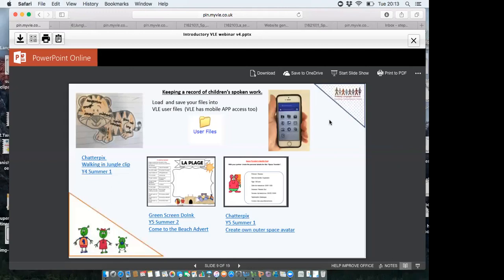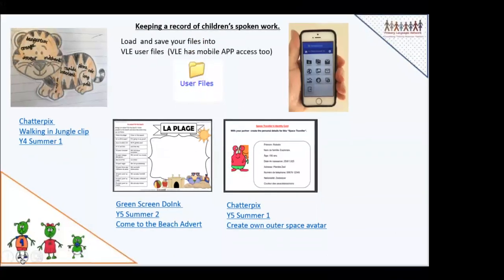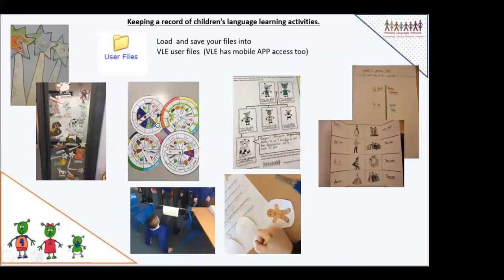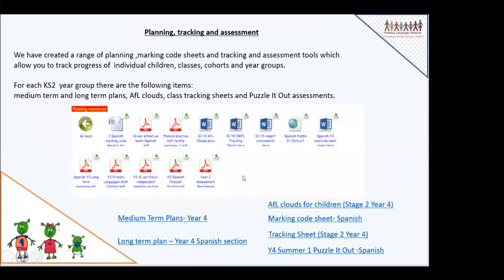Moving on — there's another little Chatterpix example showing how cool these are. The children obviously love anything to do with technology. Sometimes you think, 'I've got to download that — where am I going to save it?' Well, you can put it straight into the VLE. If you download the My Learning app, it gives you direct access to put things straight from your device into your file. You can also keep photos — months wheels created in Year 3, alien family work in Year 4 on family members, verb conjugation in Year 6, and a creative activity of children limboing under 'uno/una' to identify noun gender. Photos can be downloaded straight into your user files on the VLE.